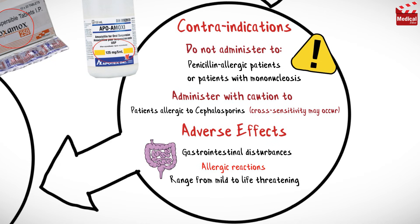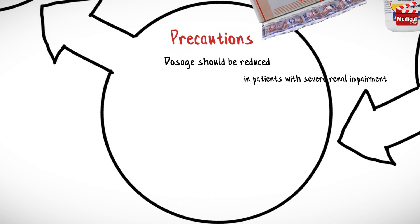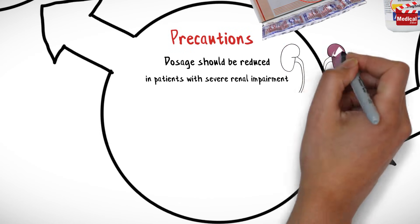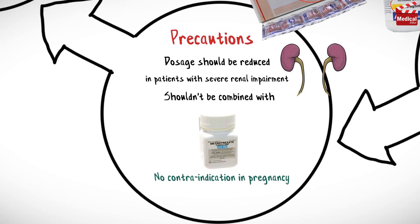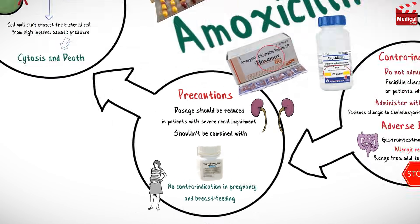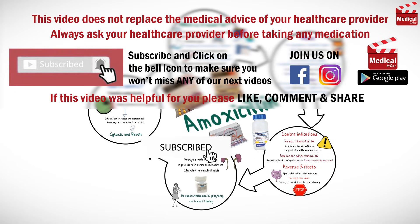In case of allergic reactions, stop treatment immediately. Dosage should be reduced in patients with severe renal impairment, and it should not be combined with methotrexate. There is no contraindication in pregnancy and breastfeeding. Subscribe and click on the bell icon for more videos like this.